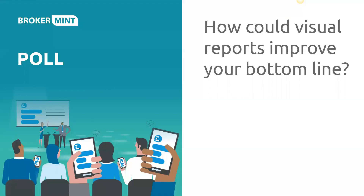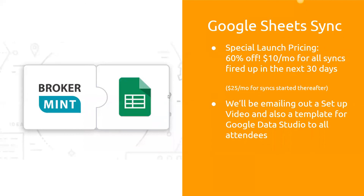We ran through the poll question and it was pretty apparent — 98% of everybody is a visual learner. So think about how this could really improve your bottom line and what kind of data you have and what you can do with it. The visuals Tyler just explained represent some really powerful stuff. We really appreciate you guys attending today. As Tyler mentioned, this integration is 60% off — $10 a month — if you get it started in the next 30 days, locked in forever.